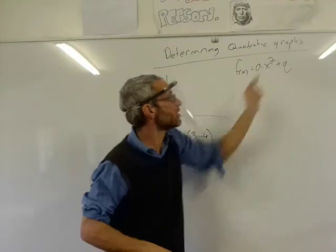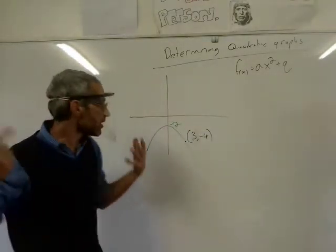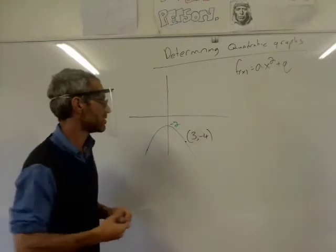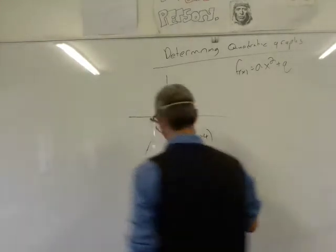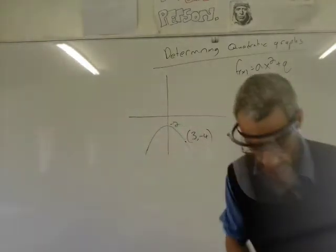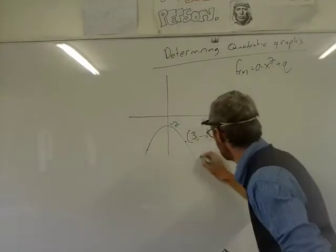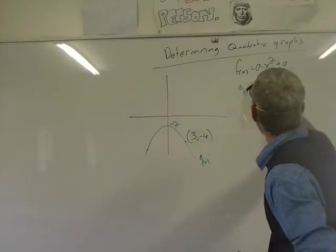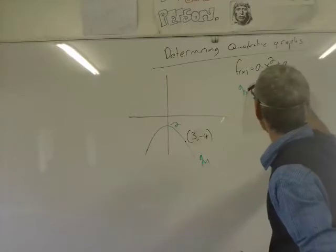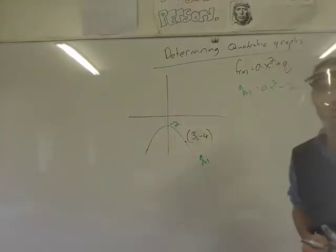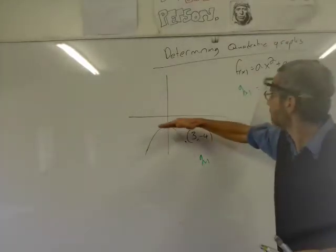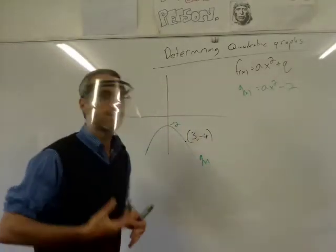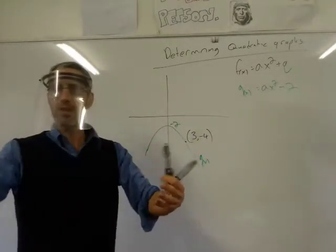So in other words, we need to figure out a and q. Q — straight away — we know what q is. What is q? Minus 2. So I'll call this g of x. I know that g of x will be ax squared minus 2, because that's the y-intercept. I still don't know what a is. How would I know it? We substitute.